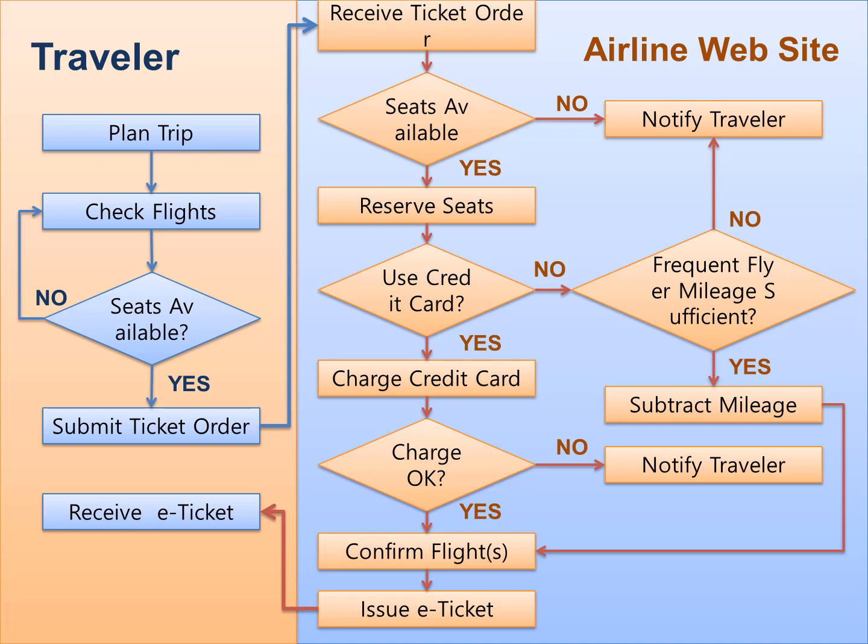On the right hand side, where we have the blue background, you see what happens at the airline website. We have two different agents interacting with each other: the traveler and the airline website. What we're trying to do here is, first, understand the situation and the problem domain, and second, use this logic diagram to develop information systems applications. It's a way of analyzing problems, using various charting methods in the development process.